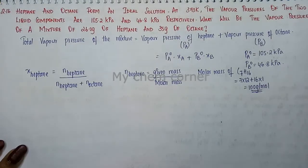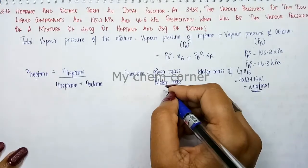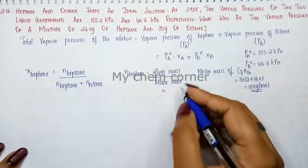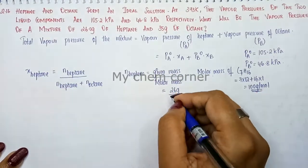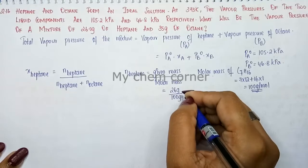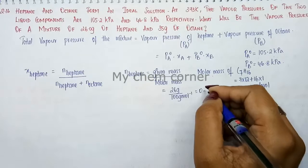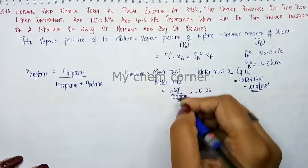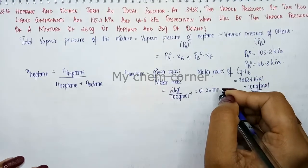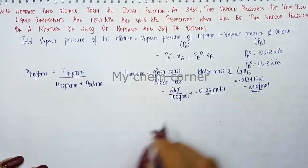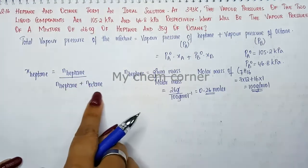Substituting into the equation: given mass of heptane is 26 grams divided by molar mass of 100 grams per mole. When divided, grams cancel and we get 0.26 moles as the number of moles of heptane.